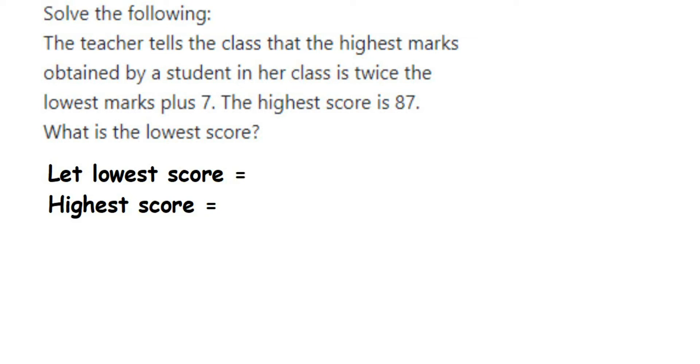Hey everyone, here is a question on equations. The teacher tells the class that the highest marks obtained by a student in her class is twice the lowest mark plus 7. The highest score is 87.